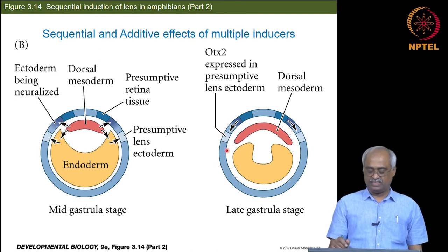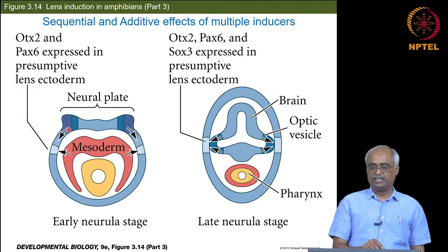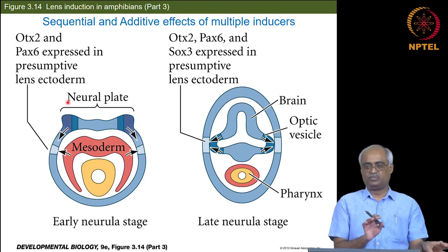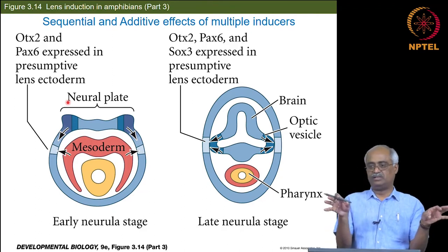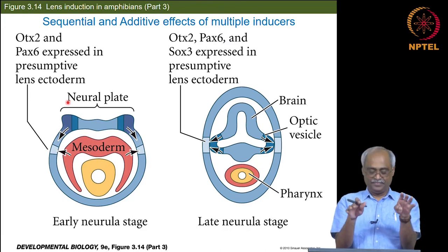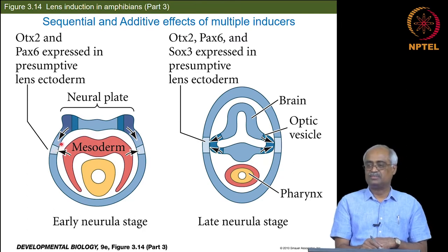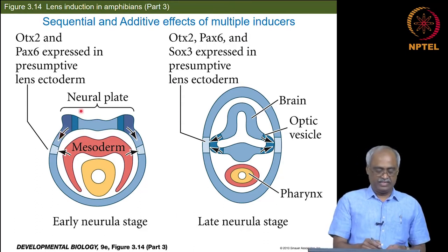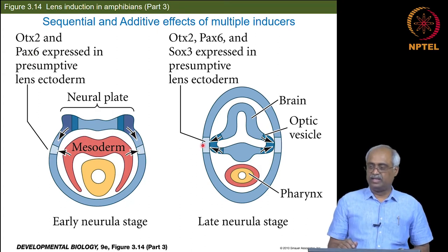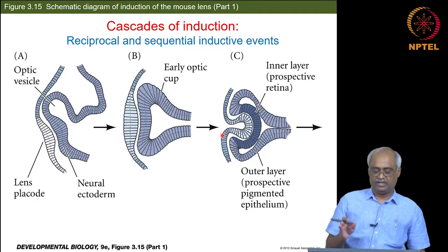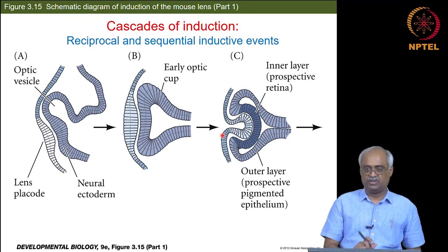The next step is Pax6 expression. At this point, the neural plate is differentiating — remember the N-cadherin and E-cadherin expressing cells: one becomes epidermis, another becomes neural cells contributing to the neural plate. Those neural cells are the ones that finally induce Pax6 here. That leads to Pax6 production, and when the optic vesicle finally induces, you get SOX3. They think the signal is BMP4. These inductions happen in a cascade and in a reciprocal manner.